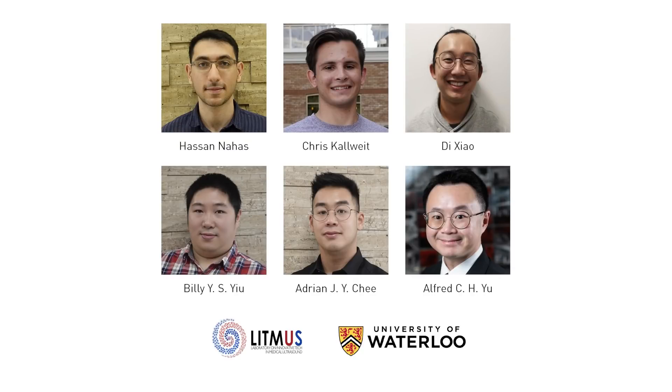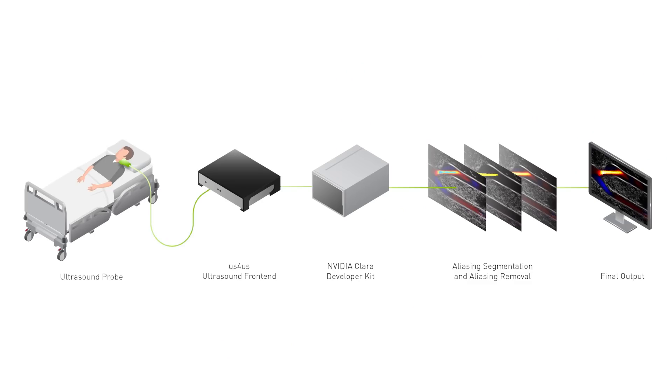The Litmus group at the University of Waterloo found a way to solve this problem by building AI models to remove aliasing artifacts in real time. To do this, we use approximately 1,000 images obtained from real arteries to train a unit convolutional neural network to detect aliasing artifacts.